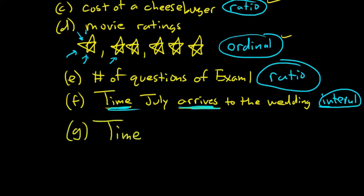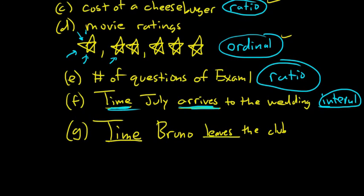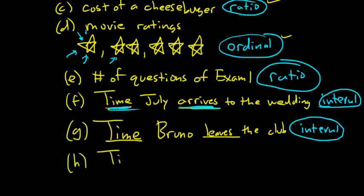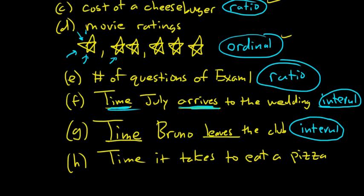This next one is a bit tricky. Time Bruno leaves the club — that's a time of departure, so this is also interval. Then: time it takes to eat a pizza. Just because it says 'time' doesn't mean it's interval. It has to be time of arrival or departure. This is a length of time — zero is the starting point — so this is actually ratio. Be careful with that distinction.